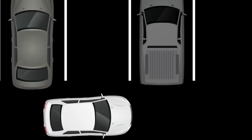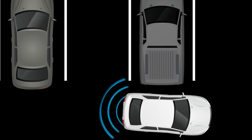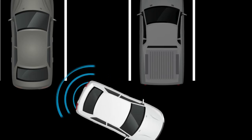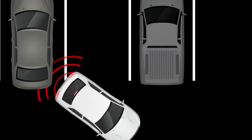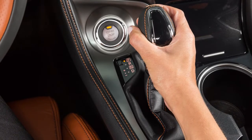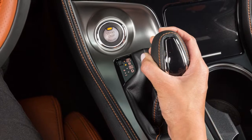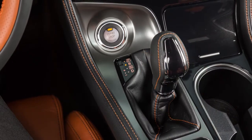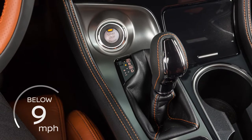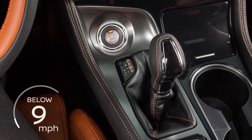The Rear Automatic Braking or RAB system can assist the driver when the vehicle is backing up. RAB operates when the shift lever is in the reverse position and the vehicle speed is less than approximately 9 miles per hour.